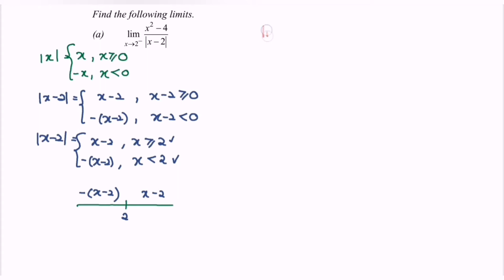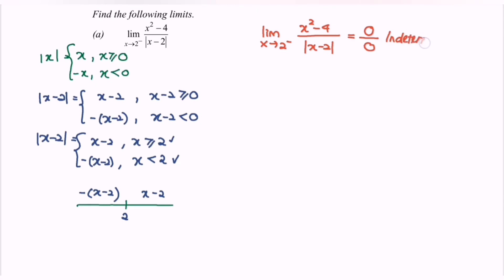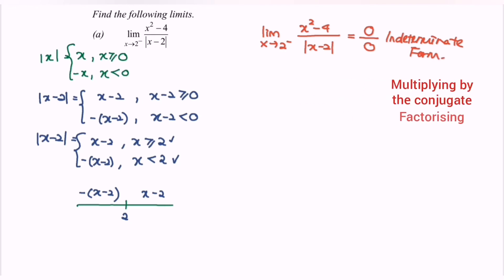We have the limit as x approaches 2 from the left for the function (x squared minus 4) over the absolute value of x minus 2. Substituting the value into the numerator: 2 squared equals 4, minus 4 gives 0, so the numerator is 0 over 0 — an indeterminate form.